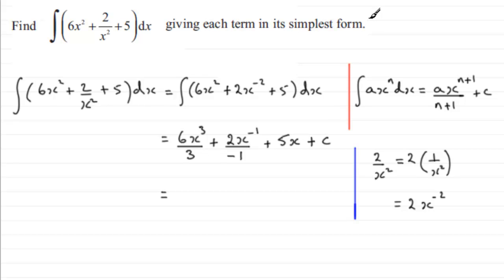Now we need to give each term in its simplest form. For this term, 6 divided by 3 gives us 2, so we've got 2x cubed. Then we've got plus 2 divided by minus 1 which is minus 2, and we're multiplying this with x to the minus 1, which is 2 times 1 over x. Then plus 5x and plus the constant of integration C. This doesn't look that good, so I'm going to change it: we've got 2x cubed minus 2 times 1, which is 2 over x, plus 5x plus C.